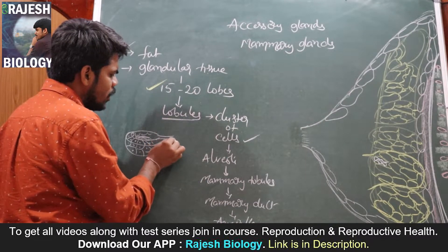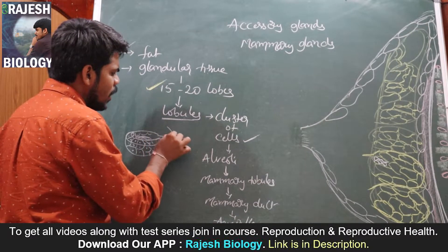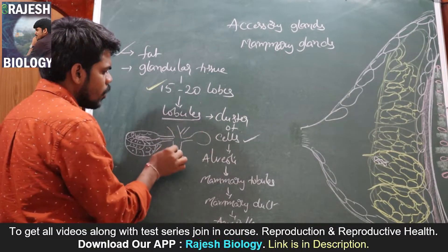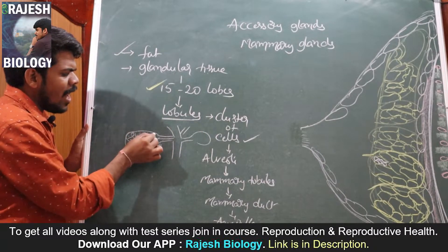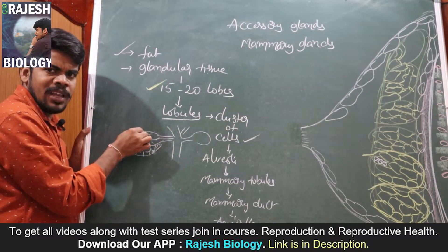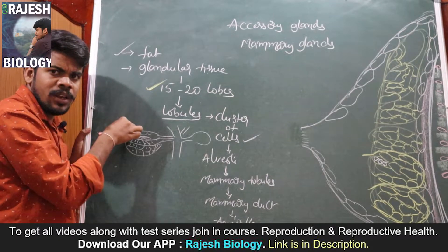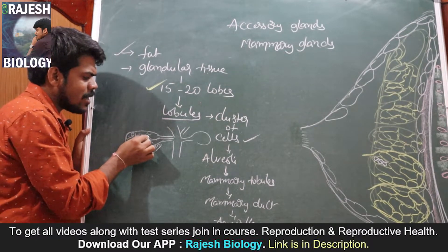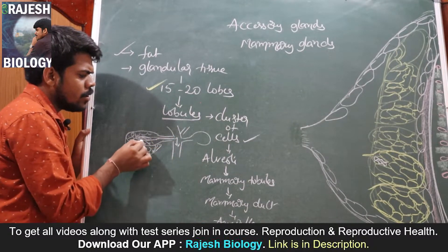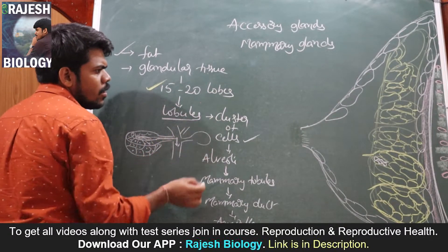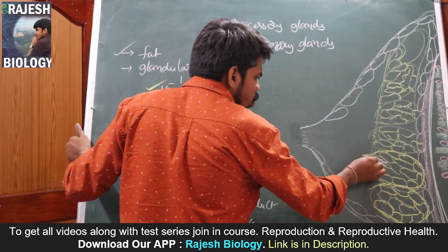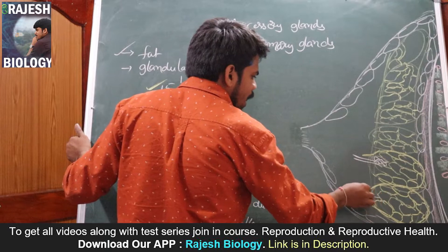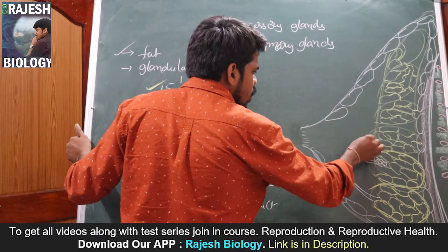The alveolus is connected with a ductule — it is connected to the mammary tubule. All the alveolar cells secrete the milk and that milk is stored in the lumen or cavity. When stimulated, that milk is transported into the mammary tubule. Mammary tubules are present in each and every lobe.